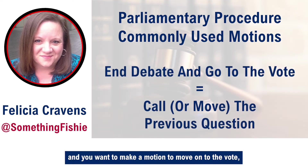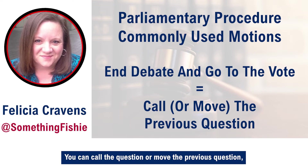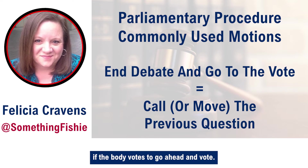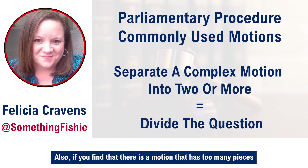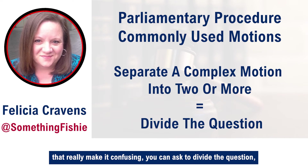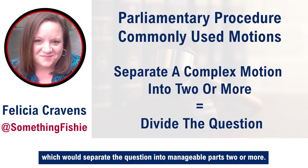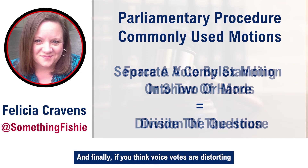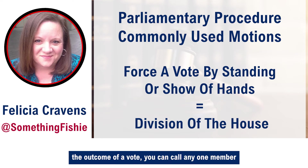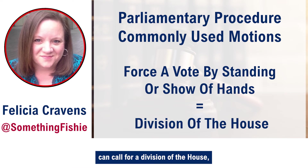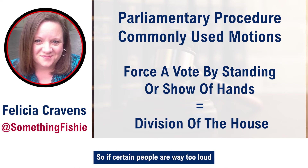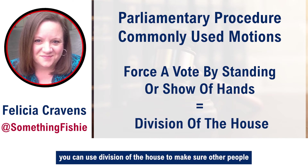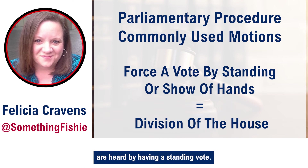If you're through with debate and you want to move on to the vote, you would call or move the previous question — and that will bring us to a vote if the body votes to go ahead. You have to have a vote before you get to the vote. Also, if there's a motion with too many pieces that make it confusing, you can ask to divide the question, separating it into two or more manageable parts. Finally, if you think voice votes are distorting the outcome, any one member can call for a division of the house, which means a show of hands or a standing vote instead.